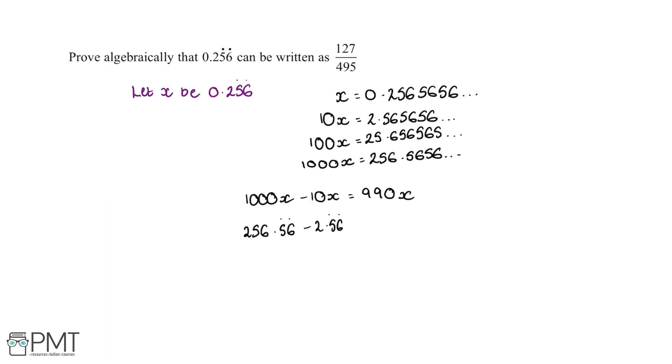And because we have the same value after the decimal point, this means that we will get a whole number for our answer, because the 0.56 reoccurring will be taken away from each other.